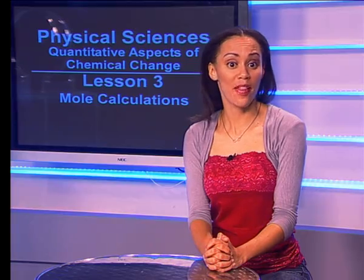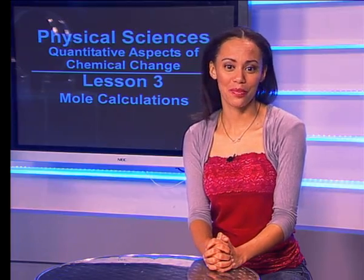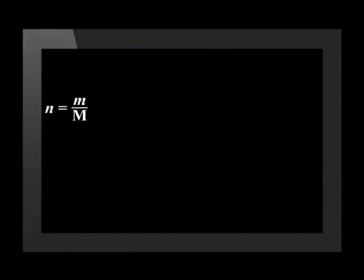Using the formula we derived earlier, we can now calculate the number of moles. We write down the formula and substitute the information we have: the mass m is 532 and the molar mass is 71. This gives us 7.49 moles.